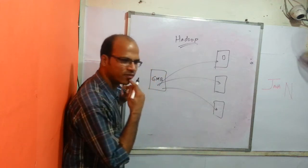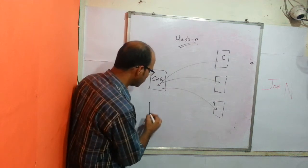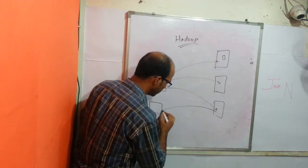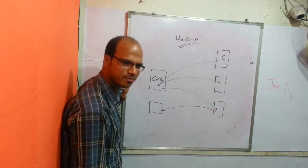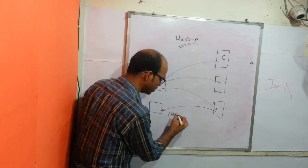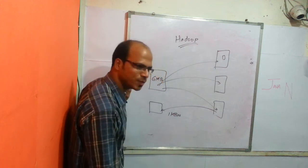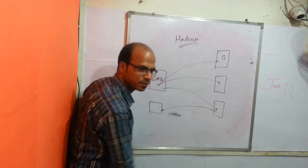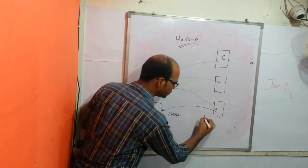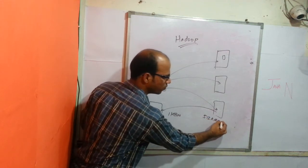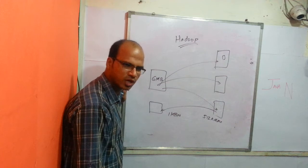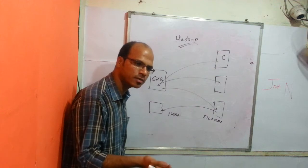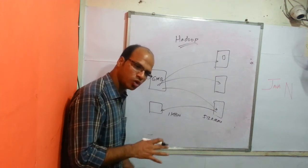Now let's say you want to download that file in the future. You choose one server. What will be the downloading speed? Let's say your internet speed is 1 Mbps. So the download speed would be 1 Mbps. But it also depends upon the server's uploading speed. If the server upload speed is 512 Kbps, obviously you will get only 512 Kbps, not 1 Mbps.